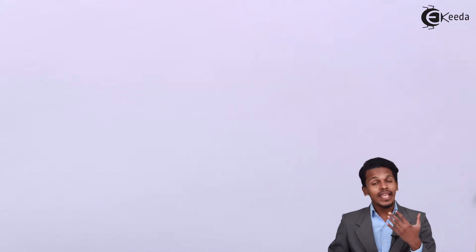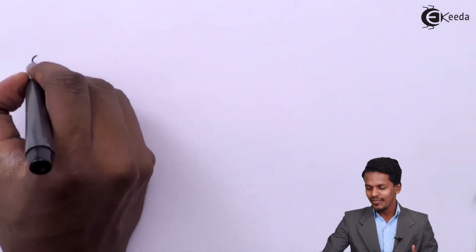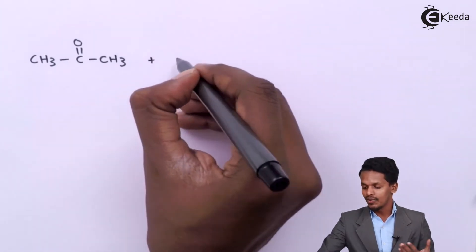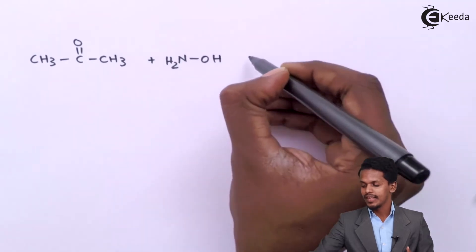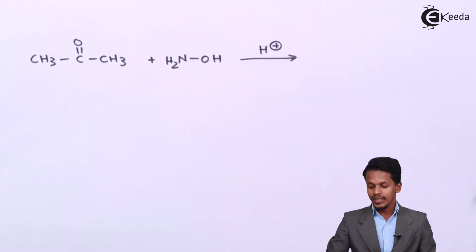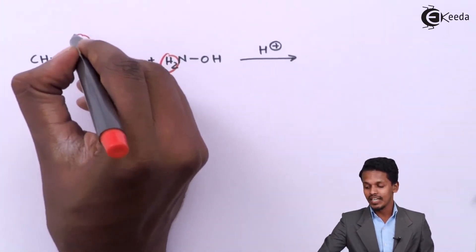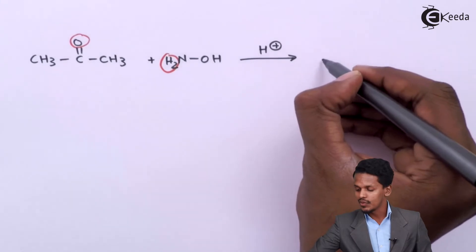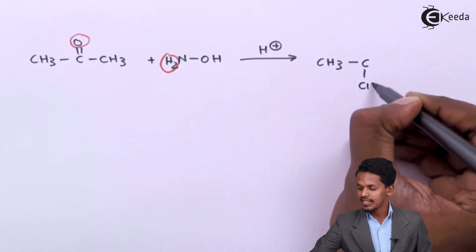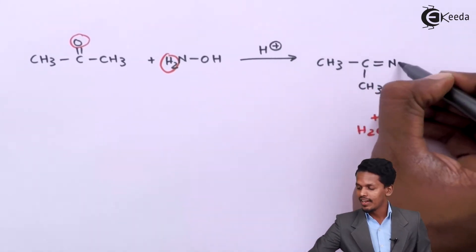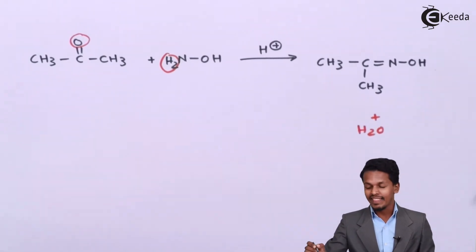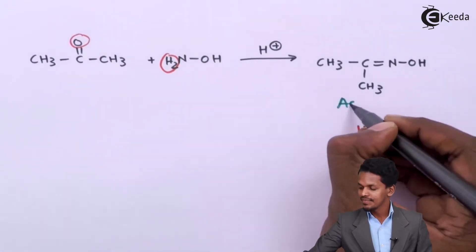Now let us see what happens when a ketone is reacted with hydroxylamine. The common example for a ketone is acetone: CH₃-CO-CH₃. When treated with hydroxylamine (NH₂OH) in a weak acidic medium, H₂ along with the oxygen atom is removed as H₂O. The product obtained is CH₃-C(=N-OH)-CH₃. This is an oxime — specifically a ketoxime. Since it is obtained from acetone, its name is acetoxime.